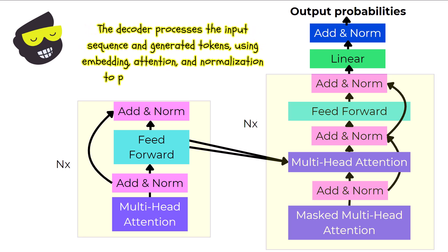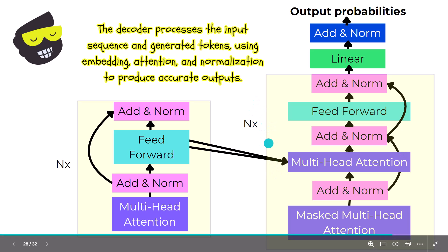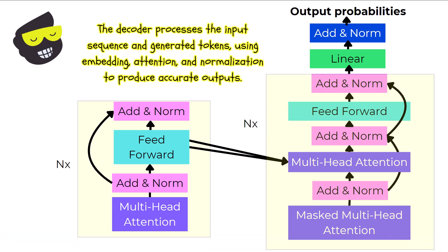The decoder in the transformer model plays a crucial role in generating outputs based on the input sequence and previously generated tokens. It starts with output embeddings and positional encoding to structure the data. The masked multi-head attention ensures the model uses only past and present tokens, maintaining logical flow. This is followed by multi-head attention that connects the output with relevant input features, aided by an add and norm layers. The feedforward network refines the information and the linear layer projects it into the output space with a softmax function, converting these into probabilities.